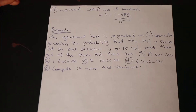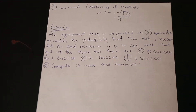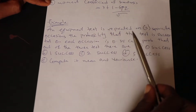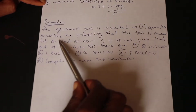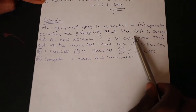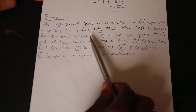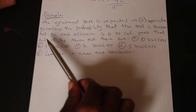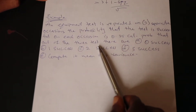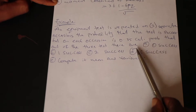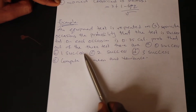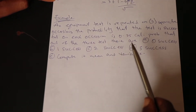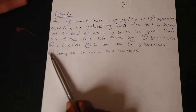So let's try an example on binomial distribution. An equipment test is repeated on three separate occasions. The probability that the test is successful on each occasion is 0.35. Calculate the probability that out of the three tests there are: a) zero successes, b) one success, c) two successes, d) three successes.